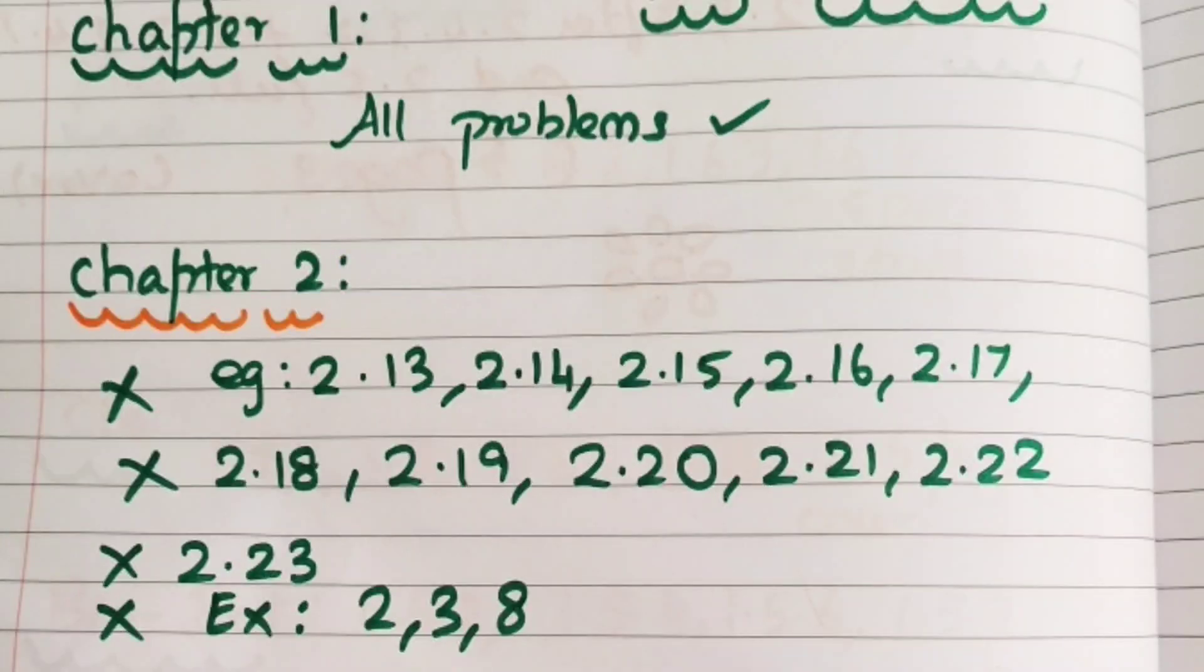Now, let's look at Chapter 2. In the examples: 2.13, 2.14, 2.15, 2.16, 2.17, 2.18, 2.19, 2.20, 2.21, 2.22, 2.23.